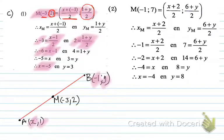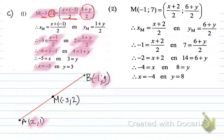For the y-values, 2 = (1 + y) / 2. Multiplying by 2: 4 = 1 + y. The 1 gets subtracted on the other side, so y = 3.